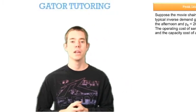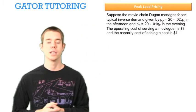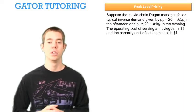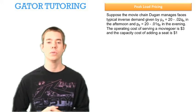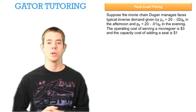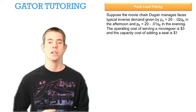Suppose the movie chain Dugan manages faces typical inverse demand given by price A equals 20 minus 0.02 QA in the afternoon, and price E equals 20 minus 0.01 QE in the evening. The operating cost of serving a moviegoer is $3, and the capacity cost of adding an additional seat is $1.